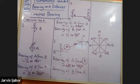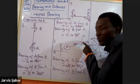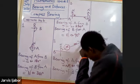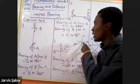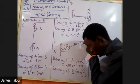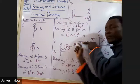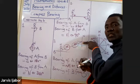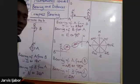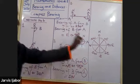Now the bearing of B from A: the reference is A. I'm not seeing B to the north, south, or east — but looking in this direction I'm seeing B in the south-west direction. So that will be equal to south-west.